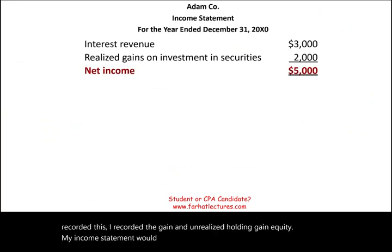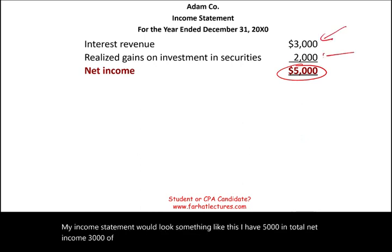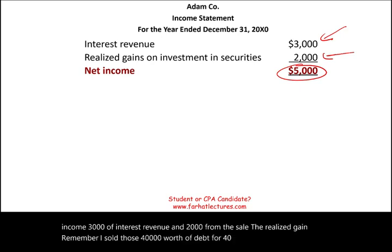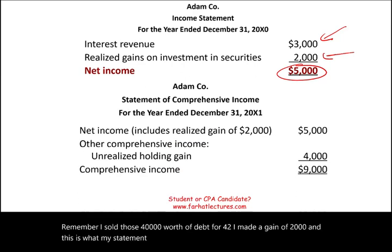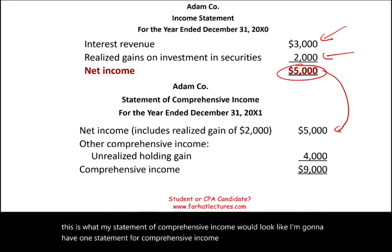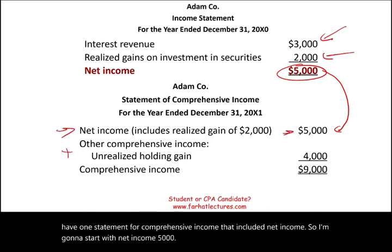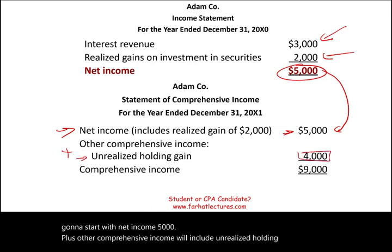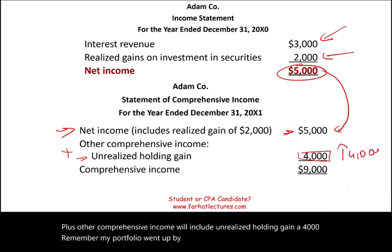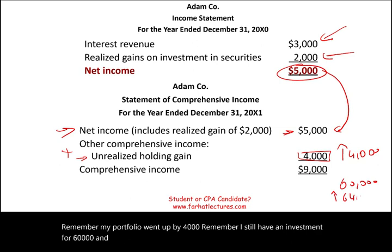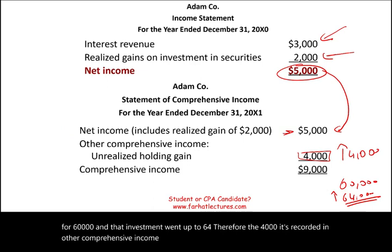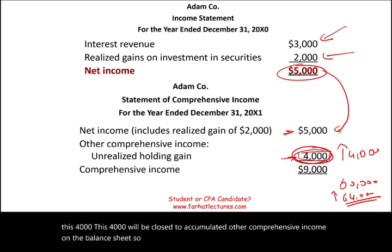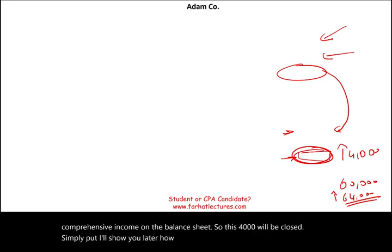My income statement shows $5,000 in total net income — $3,000 of interest revenue and $2,000 from the realized gain on the sale. My statement of comprehensive income starts with net income of $5,000, plus other comprehensive income of unrealized holding gain of $4,000. The $4,000 will be closed to accumulated other comprehensive income on the balance sheet. We debit unrealized holding gain/loss equity $4,000 and credit accumulated other comprehensive income $4,000.